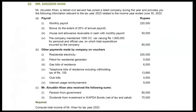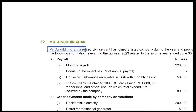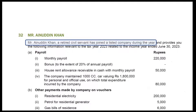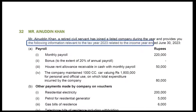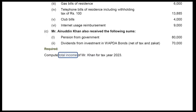You can pause the video to read it. You can see that the taxpayer in this question is an individual — Mr. Inodin Khan. After reading the first line of the question, you can infer that the individual is a resident person. Have a look at the requirement of the question: you are required to compute total income.